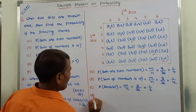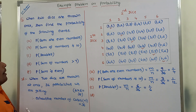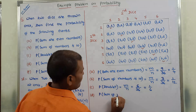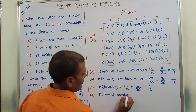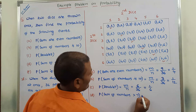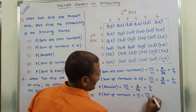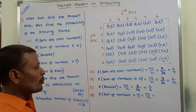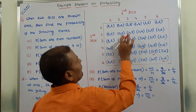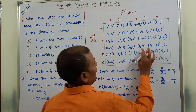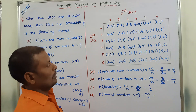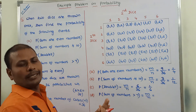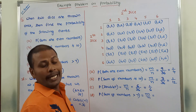Bit D: probability of sum of numbers greater than 7. That means the sum of the first coordinate and second coordinate is greater than 7. The favorable cases include: 2 comma 6 (2+6=8, greater than 7), 3 comma 5 (3+5=8, greater than 7), 3 comma 6 (3+6=9, greater than 7).